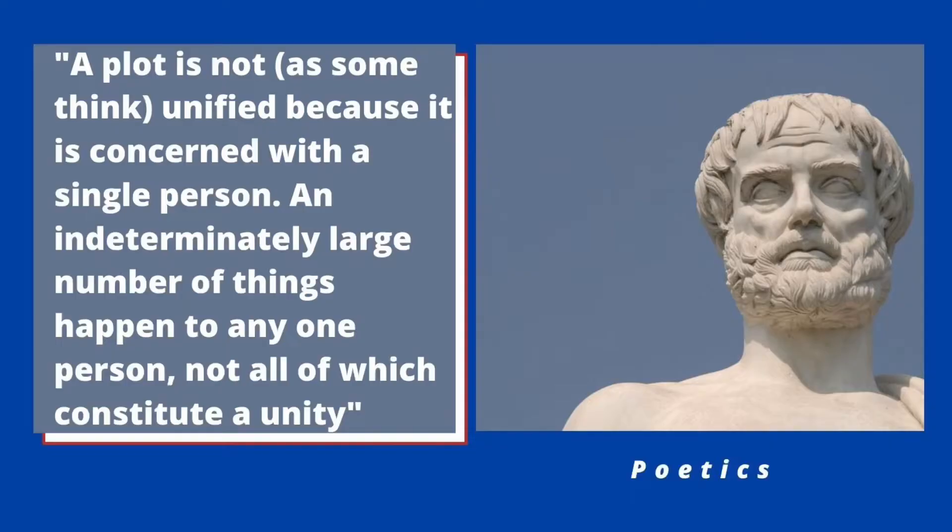He was alive around 200 BC, and what he talked about when discussing unity is, more than anything, theoretical — what is unity, and how do you determine if a story has it? In his book the Poetics, this is what he wrote: 'A plot is not, as some may think, unified because it is concerned with a single person. A large number of things happen to any one person, not all of which constitute a unity.'